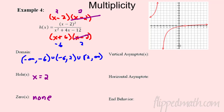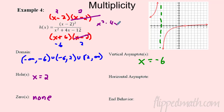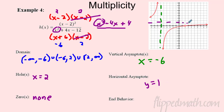Looking at the graph — the hole is actually on the zero, so there is no zero. The hole wins. For the vertical asymptote: at x = -6, the bottom factor doesn't cancel, and you can see it on the graph. For the horizontal asymptote: multiplying out the top gives x² − 4x + 4, so on top we have x² and on bottom x². Leading coefficients are 1 over 1, so the horizontal asymptote is y = 1.